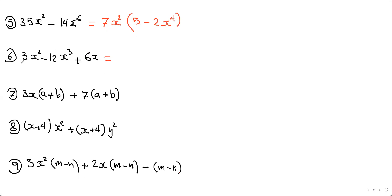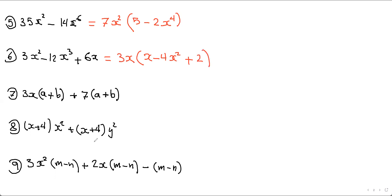For the next expression, the greatest common factor is 3x. Then 3x² divided by 3x gives x, minus 12 divided by 3 is 4 and x³ divided by x is x², plus 6 divided by 3 is 2 and the x divided by x cancels. That's your answer.